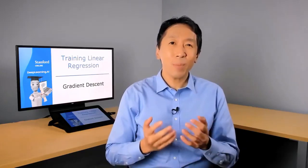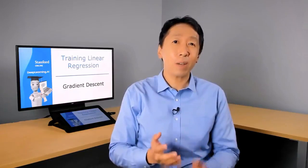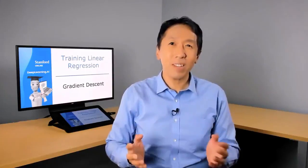It would be nice if we had a more systematic way to find the values of w and b that result in the smallest possible cost J(w,b). It turns out there's an algorithm called gradient descent that you can use to do that. Gradient descent is used all over the place in machine learning, not just for linear regression.